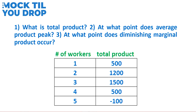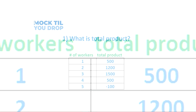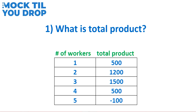We're going to be working with this chart throughout the video and answering three questions. The first question, which is probably the most straightforward, is what is total product. The second question is at what point does average product peak, and lastly, at what point does diminishing marginal product occur. In this example I'm using workers as the input and the output is going to be the number of units — let's say each worker is making baskets. In some cases you might see labor hours or machine hours used as the input, but the overall concept is going to be the same regardless.